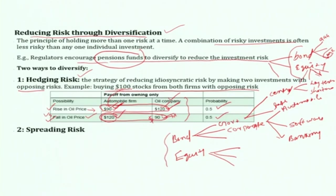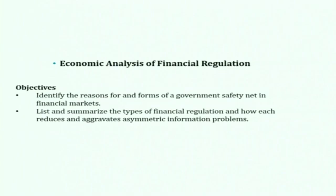So far, we have discussed the concept of risk measurement, why value at risk is an important concept in the financial sector especially in the context of regulation, and subsequently we discussed the sources of risk — idiosyncratic, systemic, and systematic risk — and methods for reducing risk through diversification, including hedging and spreading. Let us now move to another related area: an economic analysis of financial regulation.